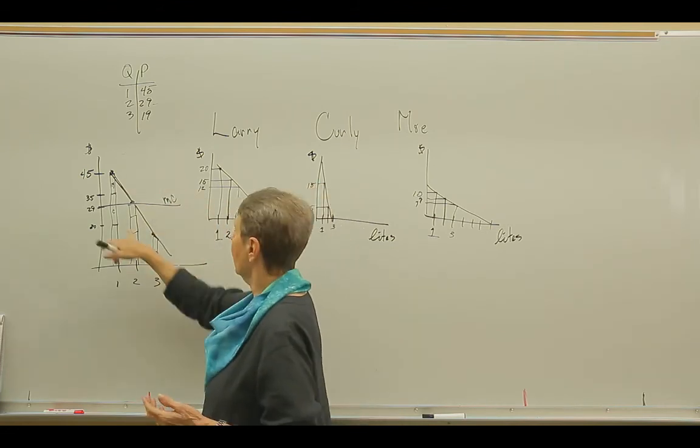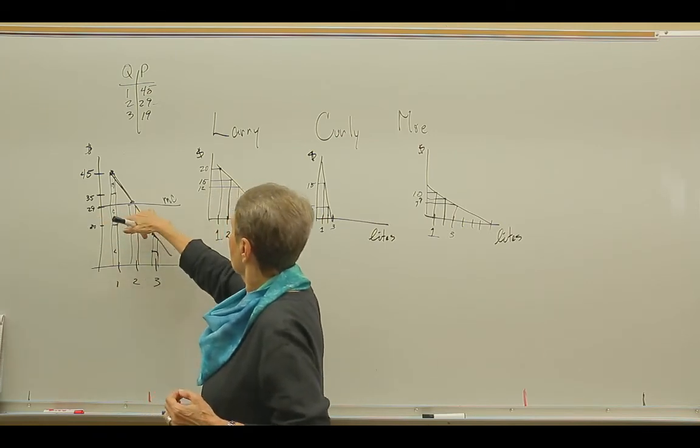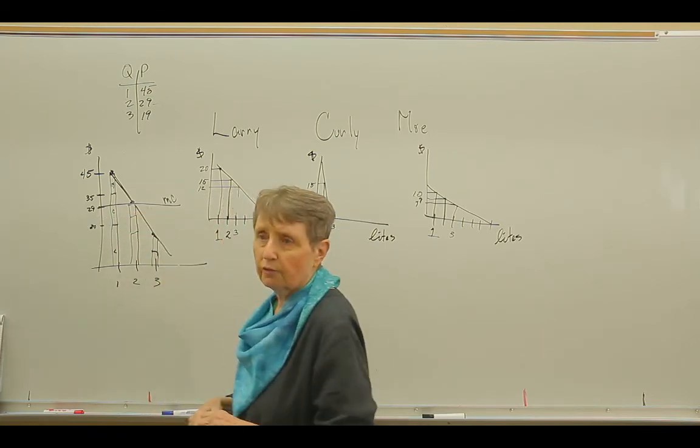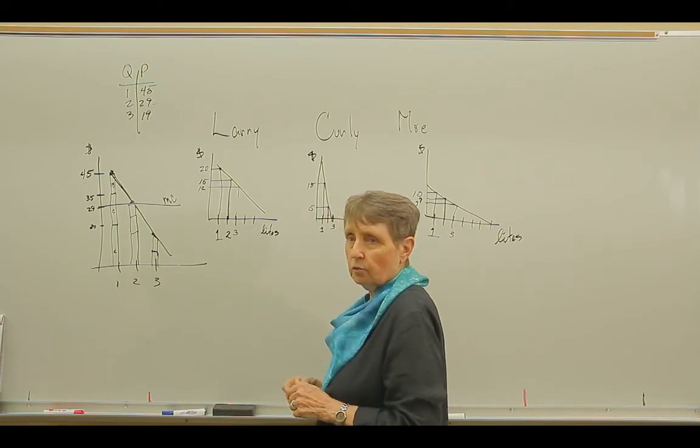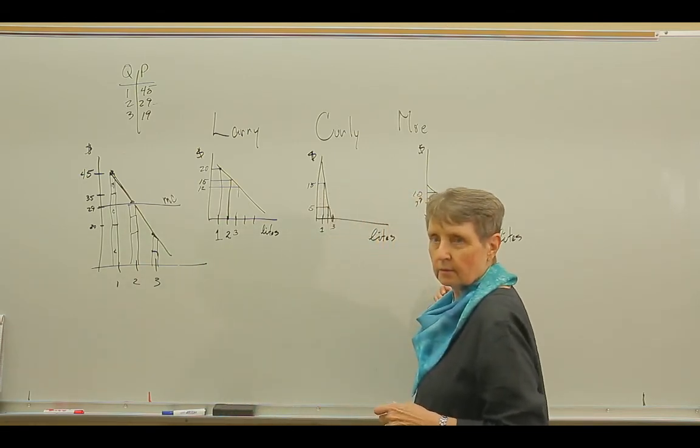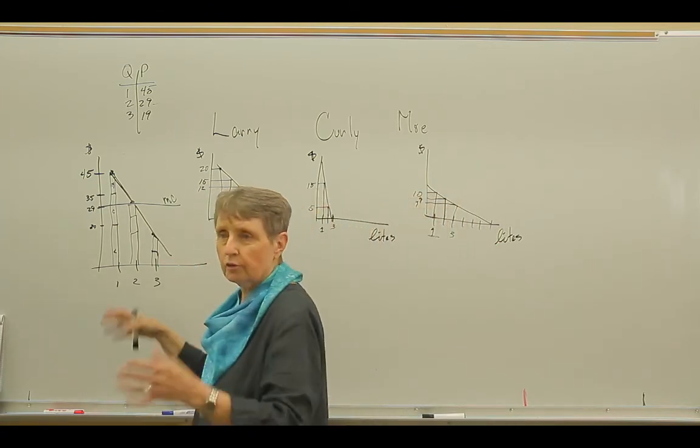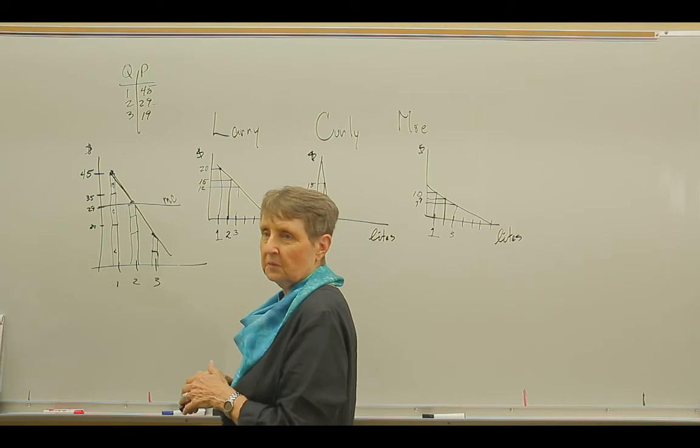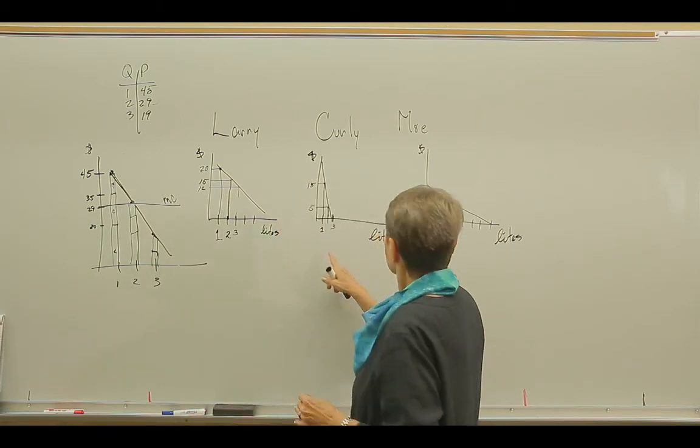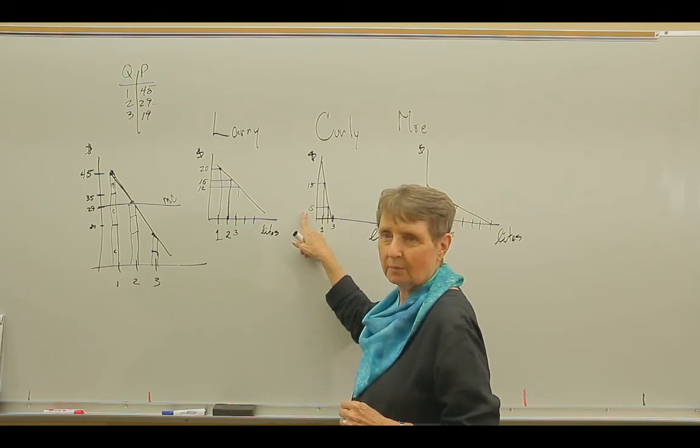Assuming these demand curves are correct. Then what we would do is, we've got $58 worth of lights to buy. Two lights at $29 a piece. We could split it three ways. Just take the $58 and split it three ways equally. But Curly wouldn't like that. Because the second street light is only worth $5 to him.